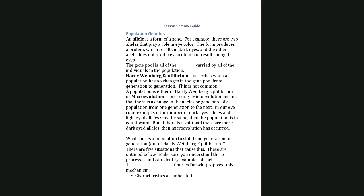Let's start with lesson one. If you have anything specific, type in the chat box and I'll try to answer it. At the beginning I want to make sure we understand the difference between an allele and the gene pool, so we're talking about population genetics — in other words, an entire population's genes. An allele just means a particular form of a gene.